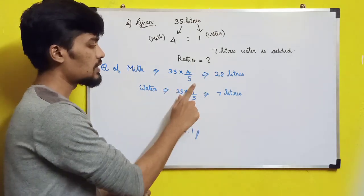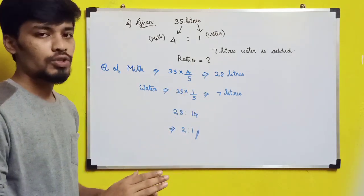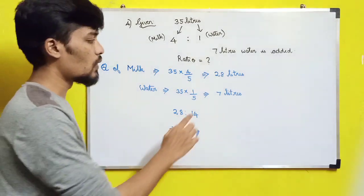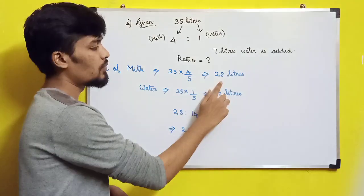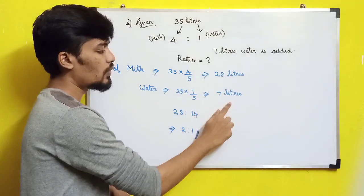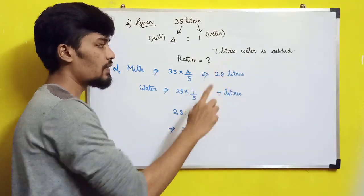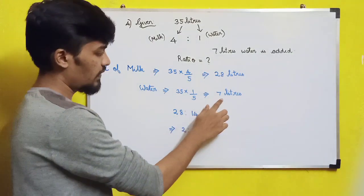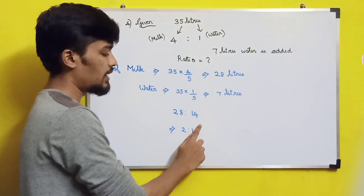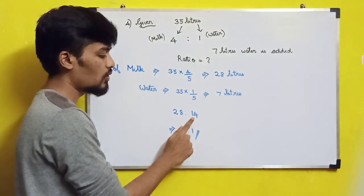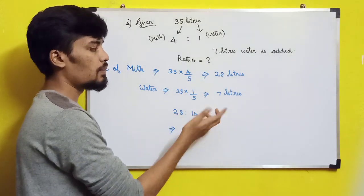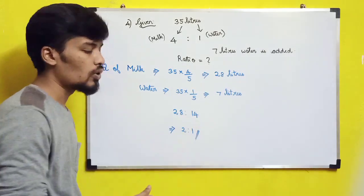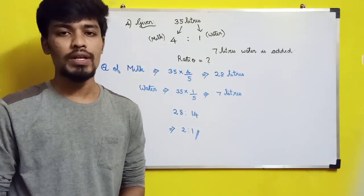Milk is 28 liters and water is 7 liters. Since 7 liters of water is added, total water becomes 14 liters. Milk remains 28 liters. So the new ratio is 28 to 14. Simplifying, you get 2 is to 1. So the new ratio of milk to water is 2:1.